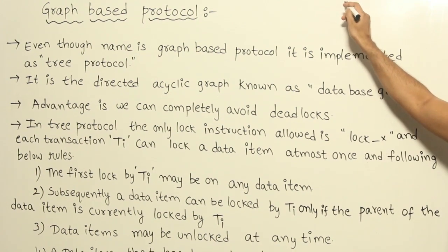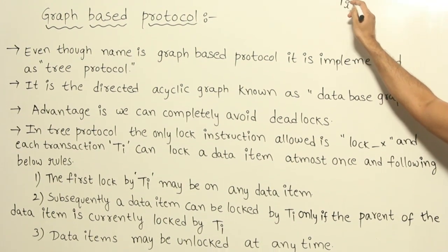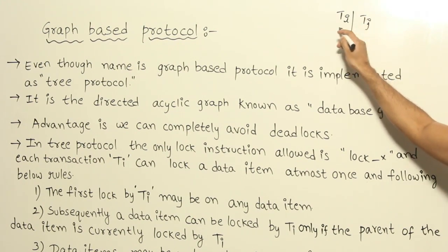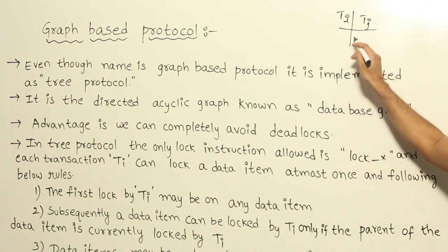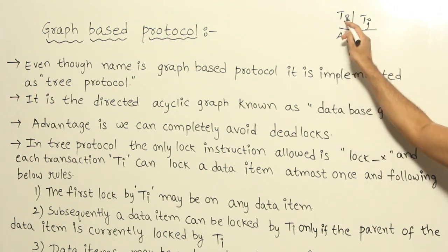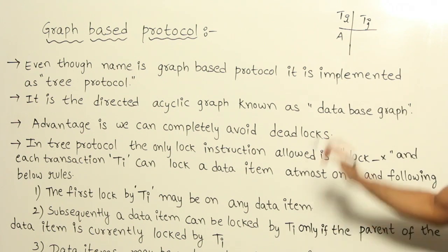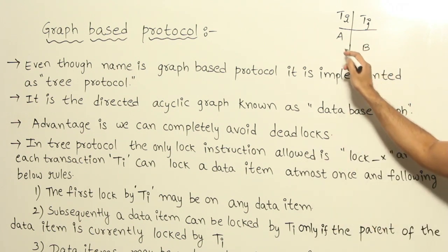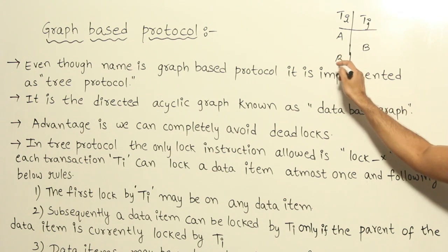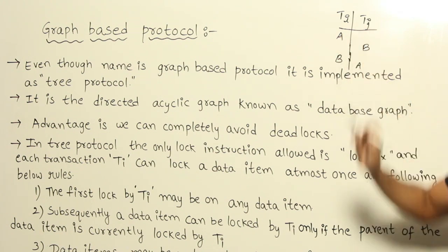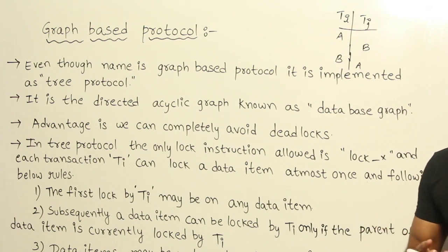Consider transaction Ti and transaction Tj. We get a deadlock when Ti has a lock on A and Tj has a lock on B, and then Ti wants a lock on B while Tj wants a lock on A — when those two locks are still held, we get a deadlock.